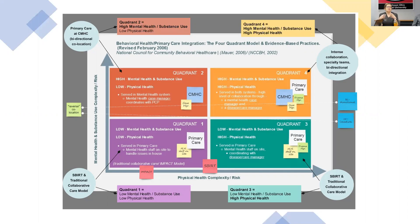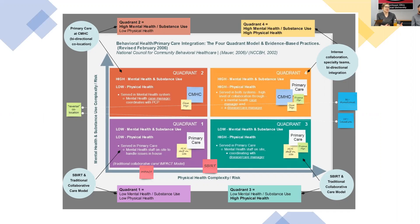Quadrant one operates within a primary care practice with a collaborating psychiatrist and an on-staff behaviorist. This is your low physical health — standard primary care practice — and low mental health needs. You'd be doing things like screening, brief intervention, and referral to treatment. You would want to have a mental health staff person on site, but that might be at a lower level of integration where they're actually an employee of another agency.